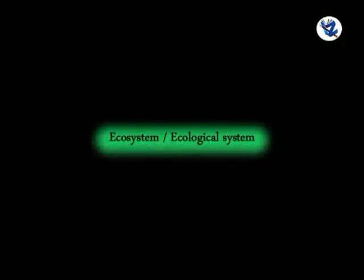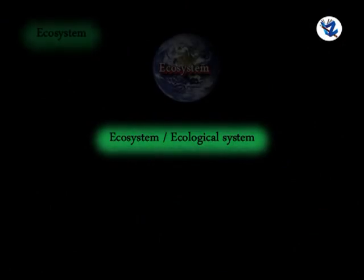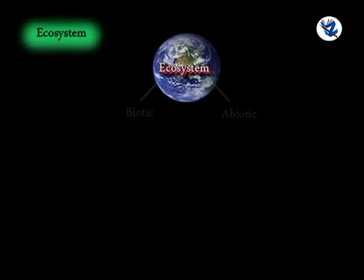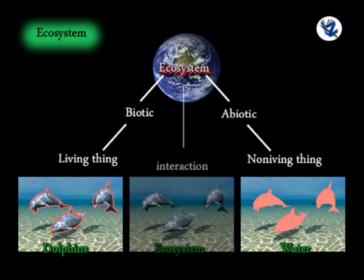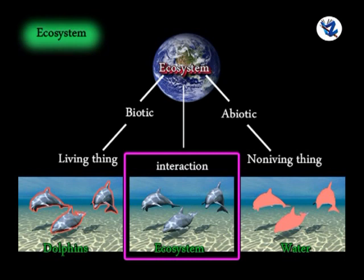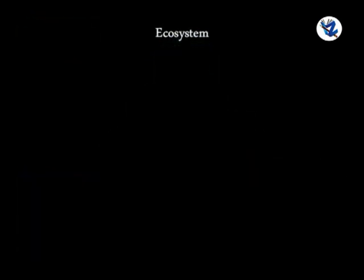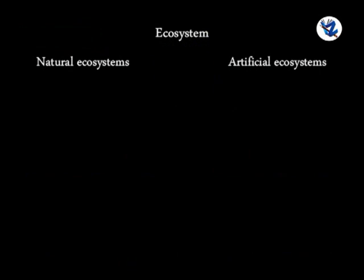An ecosystem or ecological system is the whole biotic community in a given area plus its abiotic environment. It is a system formed due to the interaction among all living organisms in a particular area and also their interaction with their physical environment. There are two main kinds of ecosystem: first, natural, and second, artificial.